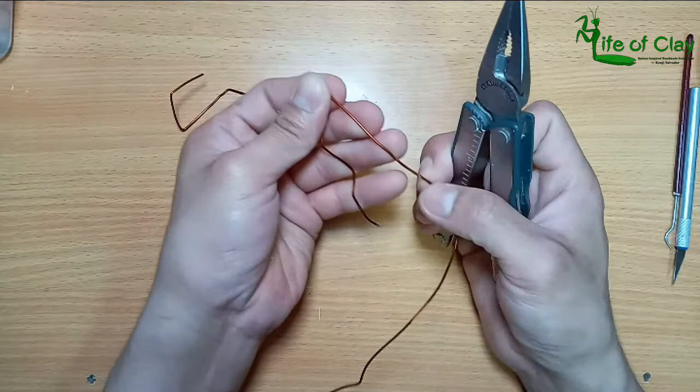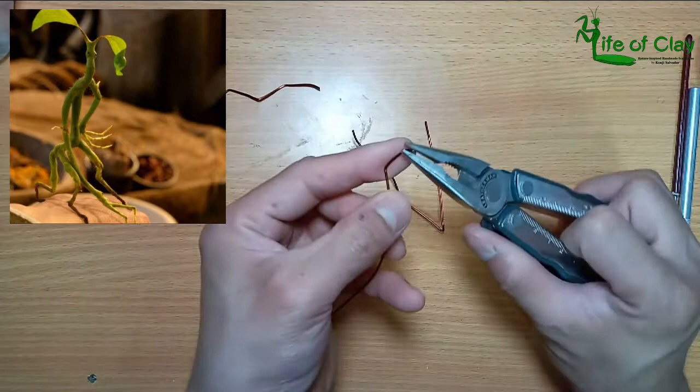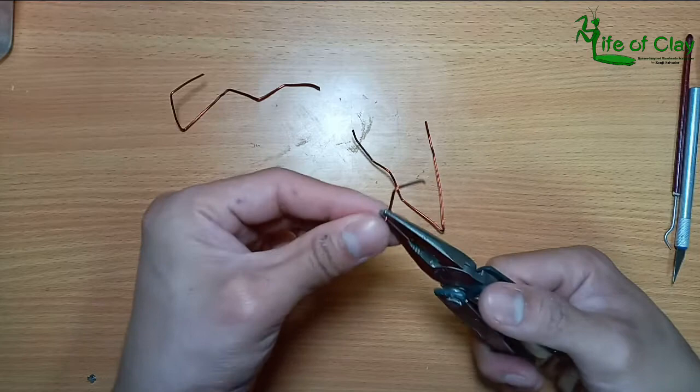Bowtruckle is a hand-sized insect eating tree-dwelling magical beast with long sharp fingers with general appearance of bark and twigs which serves well as camouflage in its natural habitat.